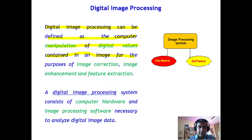Digital image processing is required for image correction, for image enhancement — to enhance the image and make it appear good — and for feature extraction, to extract some features out of the image.